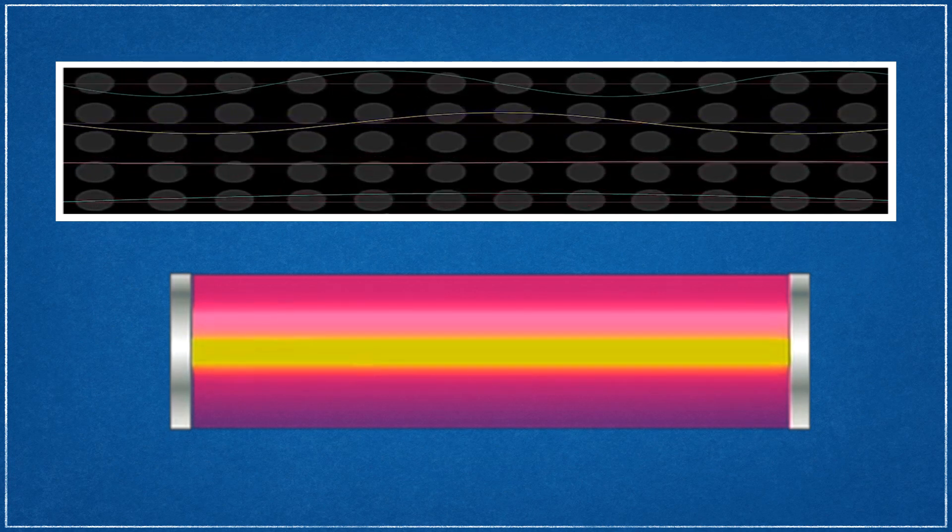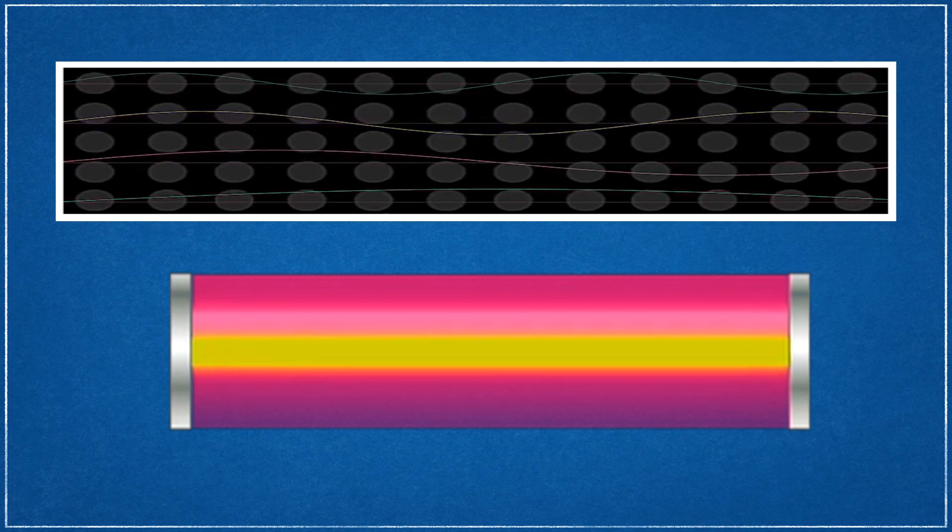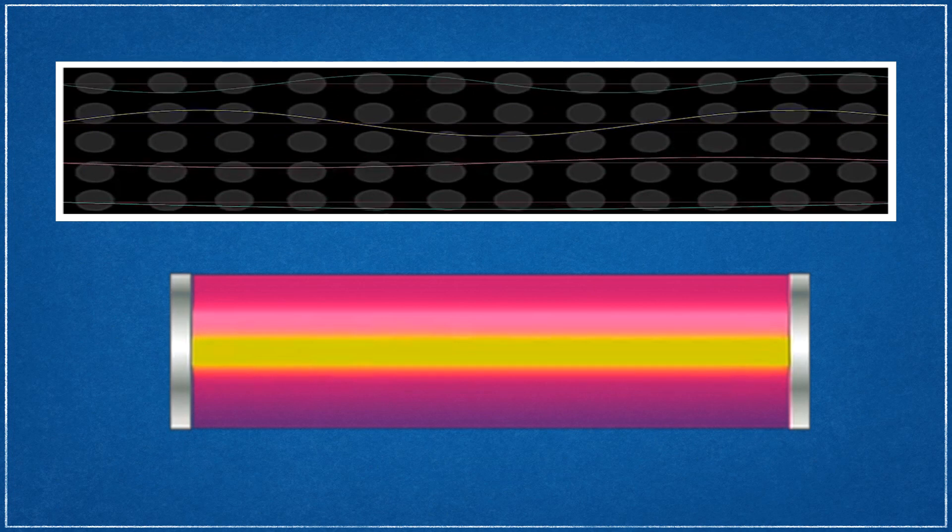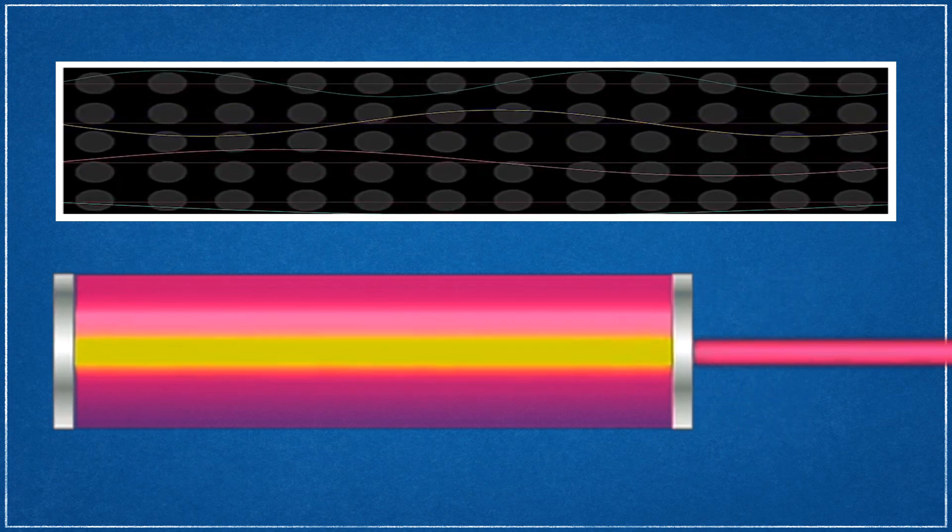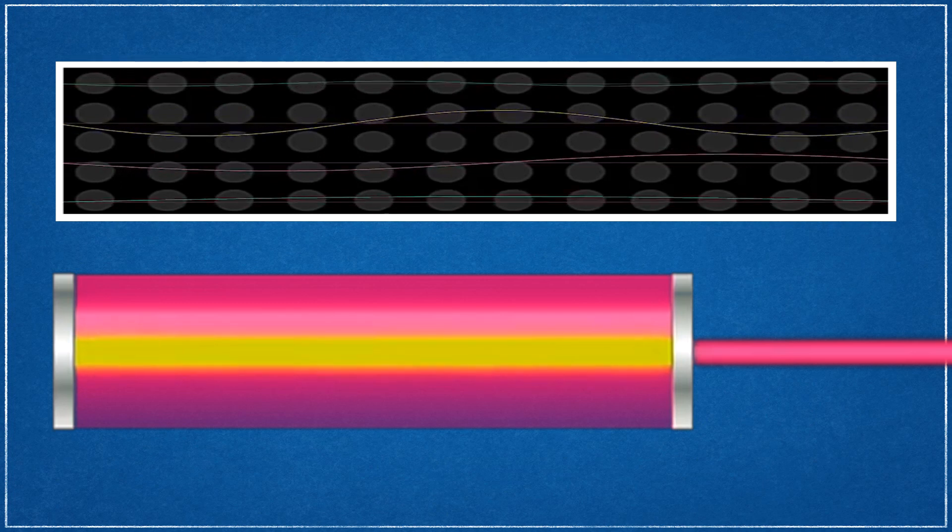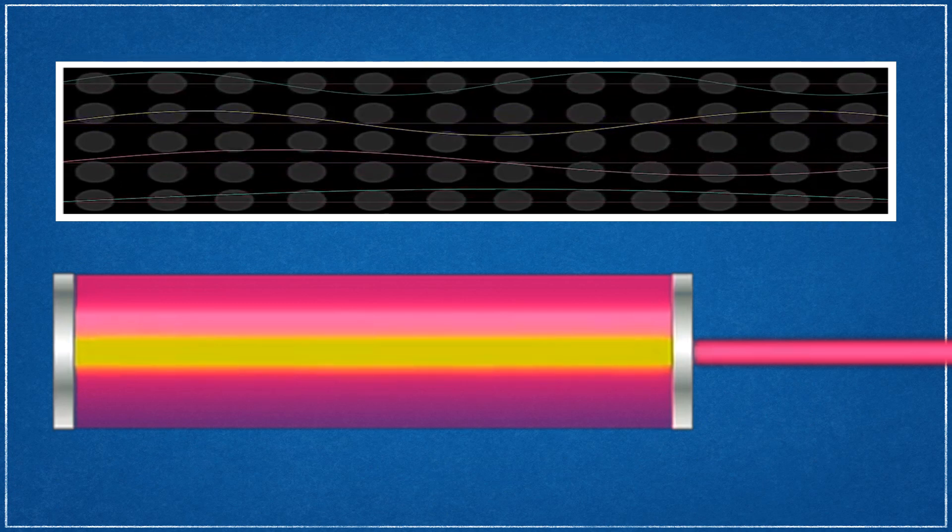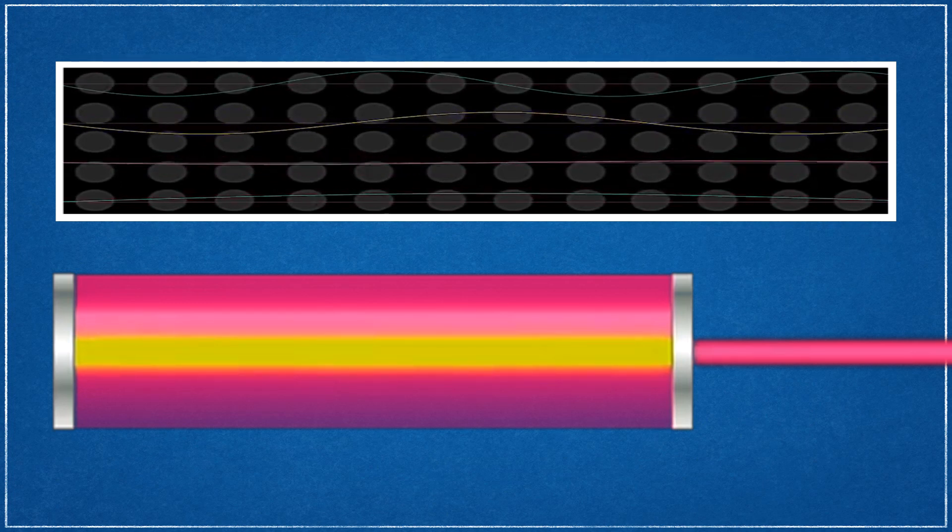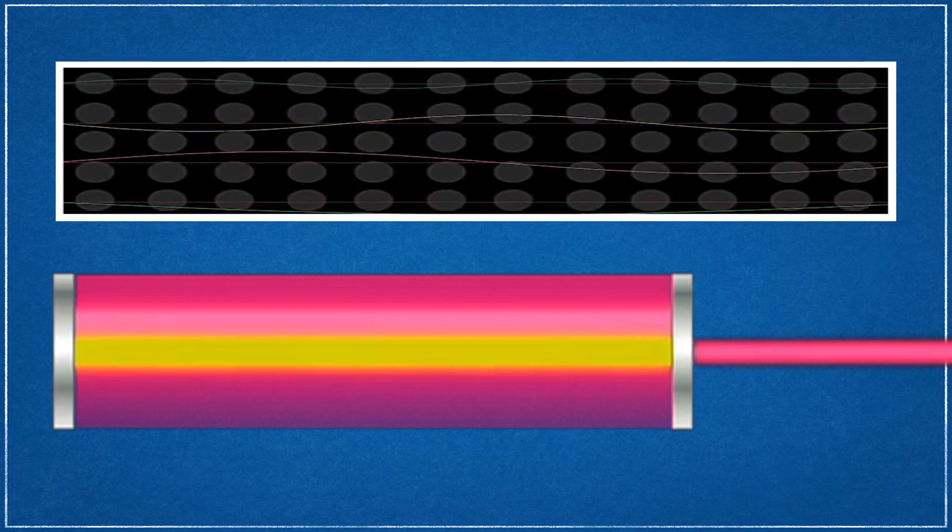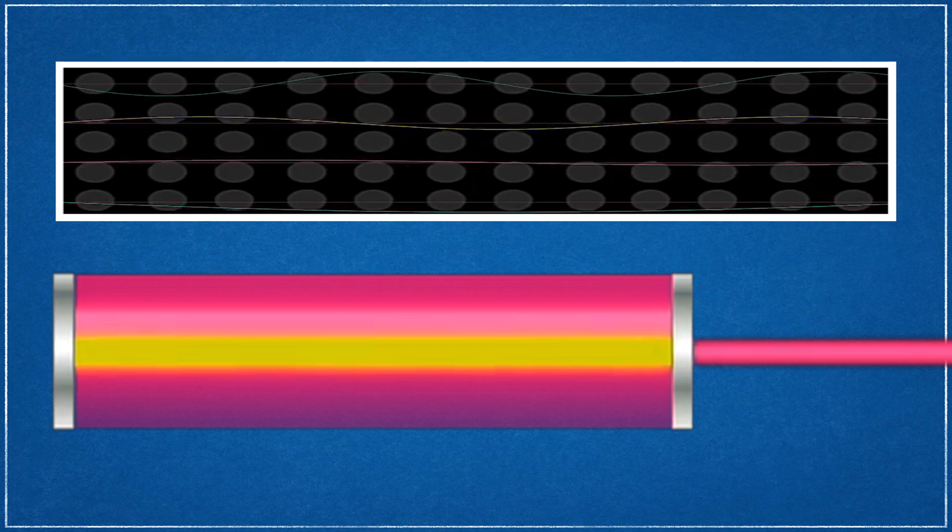The way it works is that mirrored ends create a standing wave. This means that only light at a particular wavelength can exist inside the cavity. By selecting the correct rod length, we're able to get the nearly single wavelength of light, characteristic of a laser. The addition of a small opening in one of the mirrors allows the light to escape, creating the quintessential laser beam.